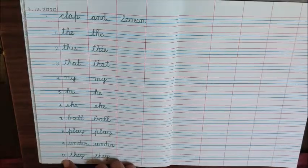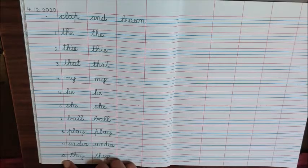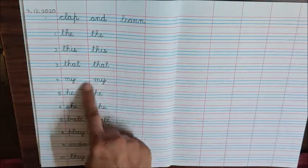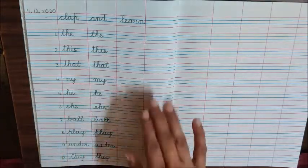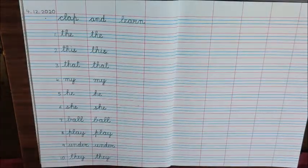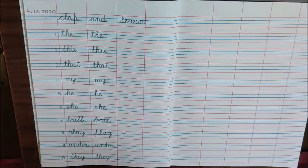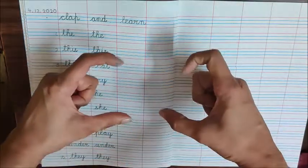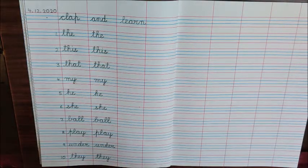So children, today we have written ten sight words. Clap and learn them, write them two times, and after writing them beautifully, ask your mum or papa to click a photo of your work and send it to your class teacher. Bye children, take care.